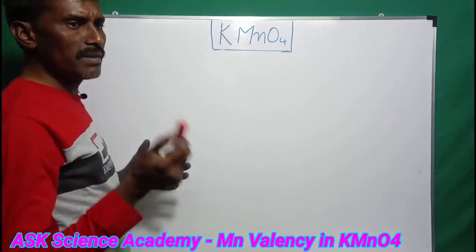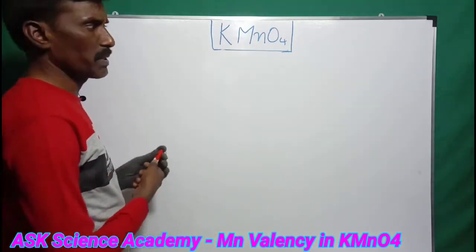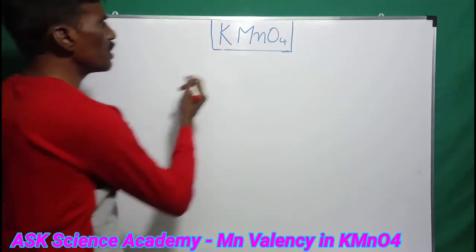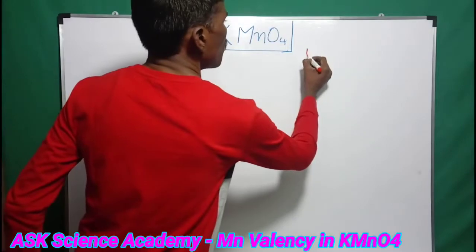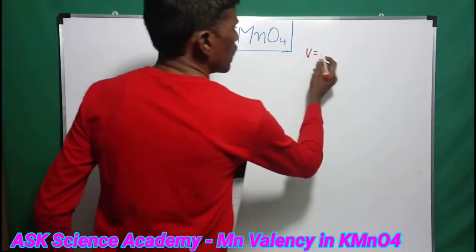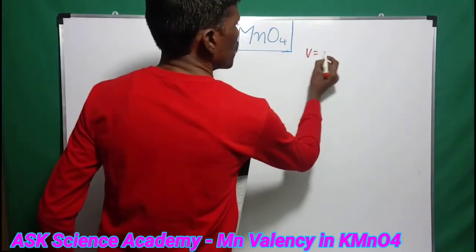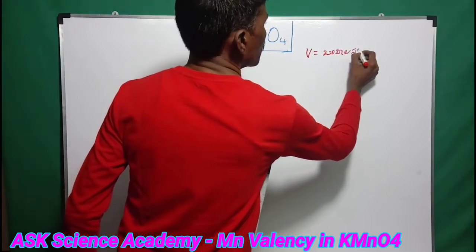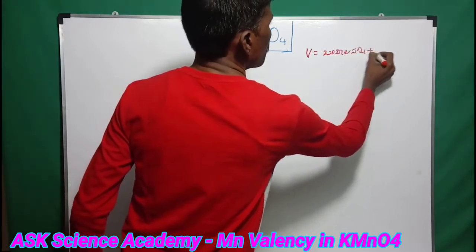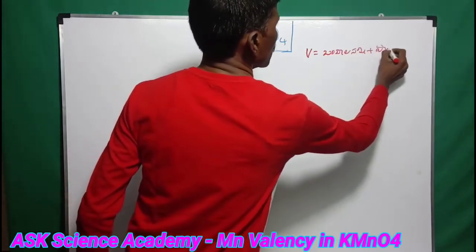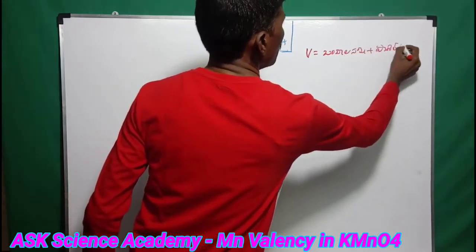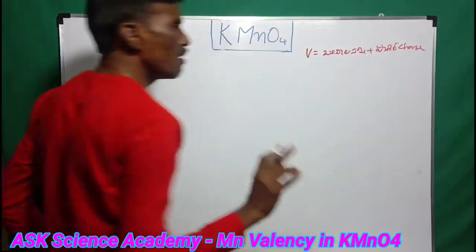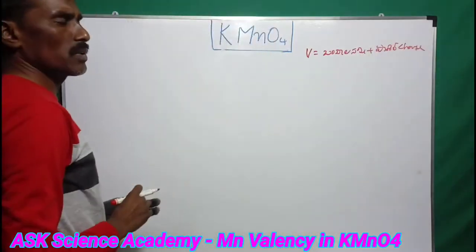We already know how to find valency using a formula. The formula for valency is: valency equals the number of bonds plus the formal charge. This is the formula used to find valency.